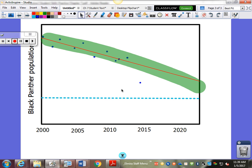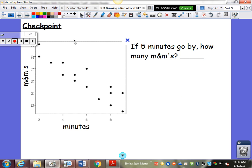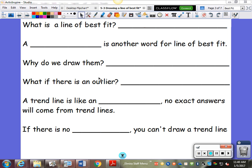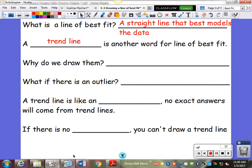So looking at our notes, what is a line of best fit? It is a straight line that best models the data. A trend line is another word for the line of best fit. Why do we draw them? It's to estimate other data points. If we want to know into the future what we think the data is going to do, what values we might expect, we're going to use that trend line.